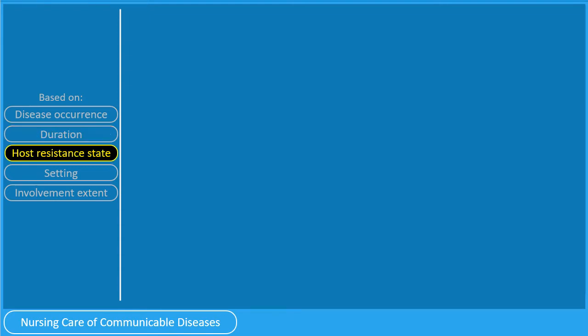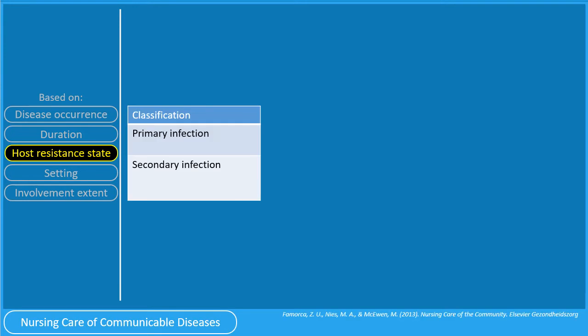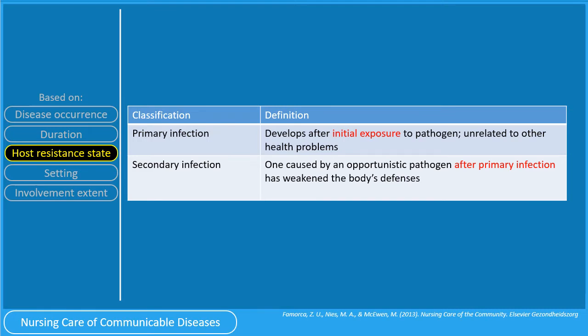The third classification is based on the state of host resistance. It could be a primary infection or a secondary infection. A primary infection develops after initial exposure to a pathogen and is unrelated to other health problems — in other words, it is an acute infection that causes the initial illness. A secondary infection is one caused by an opportunistic pathogen after a primary infection has weakened the body's defenses. Secondary infection develops when pathogens take advantage of weakened defenses resulting from a primary infection. An example of this would be a staphylococcal pneumonia as a sequela of measles.